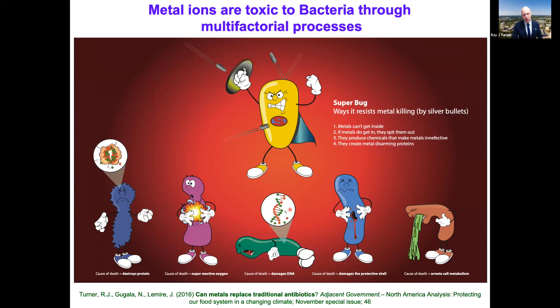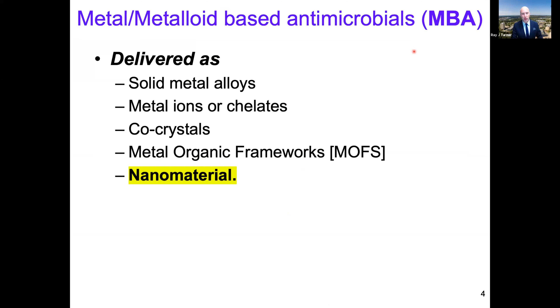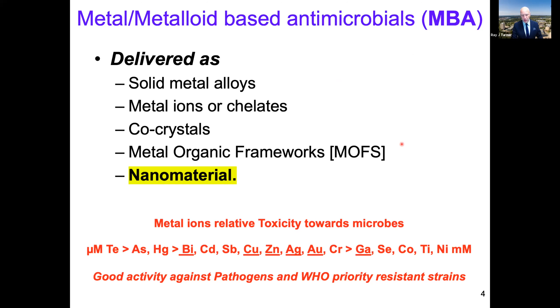Metals are toxic to bacteria in a number of ways: they can destroy proteins through direct interaction, generate reactive oxygen species, interact with DNA, damage the cell membrane and cell wall, or damage cell metabolism. There is also metal-resistant bacteria — my cartoon here is a superbug protected by silver bullets — but there is no silver bullet; there's resistance to every metal. However, if we make different formulations, we can have better metal-based antimicrobials. We can deliver our MBAs — metal or metalloid based antimicrobials — as solid metal alloys, metal ions or chelates, co-crystals, metal-organic frameworks, or nanomaterials.